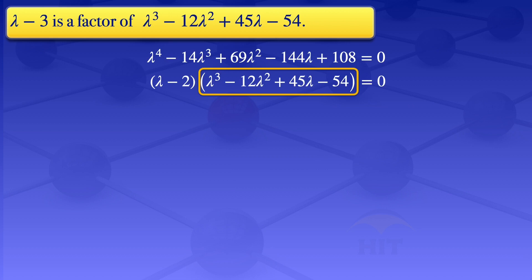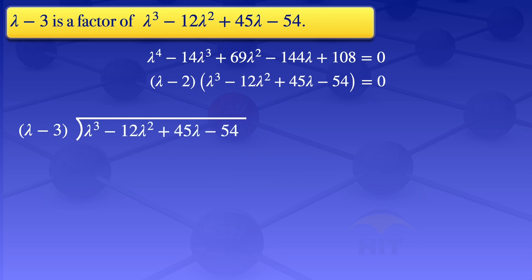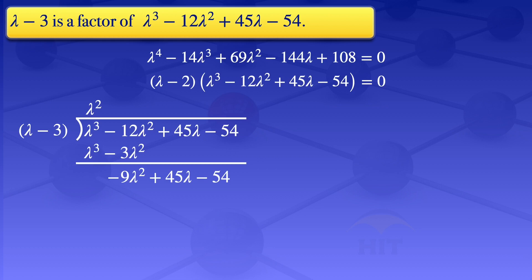To find the other factor, we use long division again, dividing λ³ - 12λ² + 45λ - 54 by (λ - 3). The leading term λ³ divided by λ gives λ², written on top. Multiplying λ² by (λ - 3) gives λ³ - 3λ². Subtracting: λ³ - λ³ = 0, and -12λ² - (-3λ²) = -9λ². The new expression is -9λ² + 45λ - 54. Dividing -9λ² by λ gives -9λ, written on top.